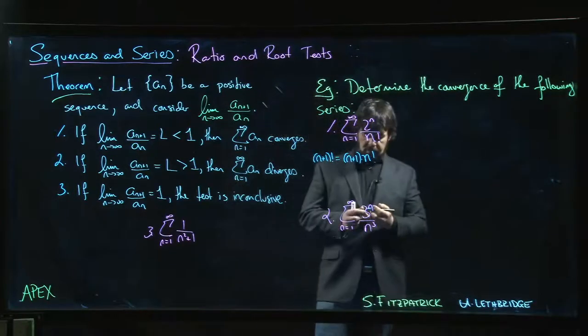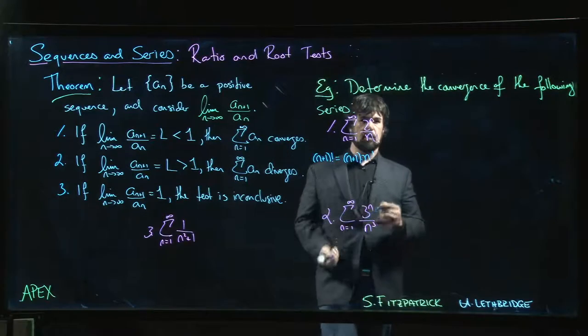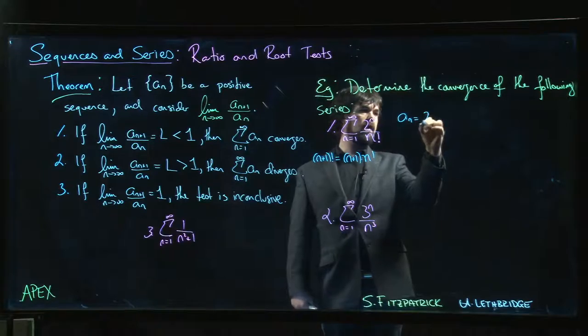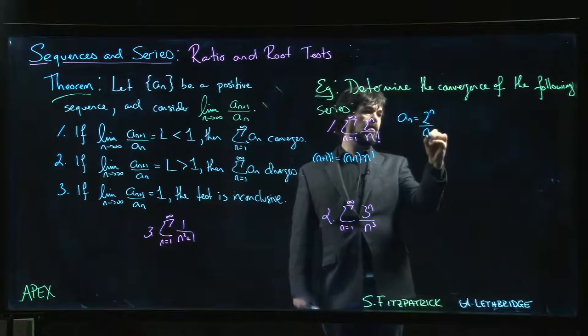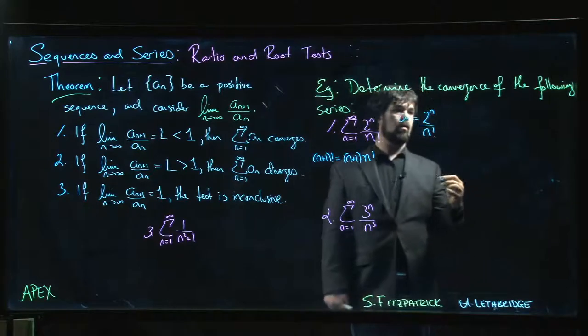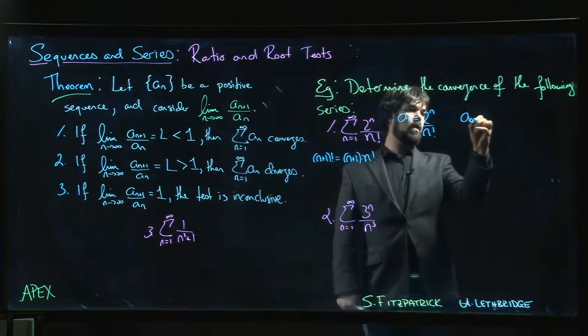That observation frequently comes in handy because in this case we would say that our a_n, a_n is two to the n over n factorial. And so we want to set up this ratio, a_(n+1) over a_n.